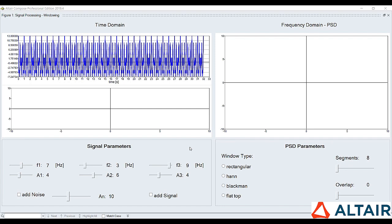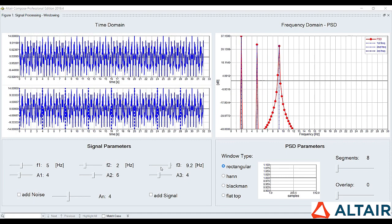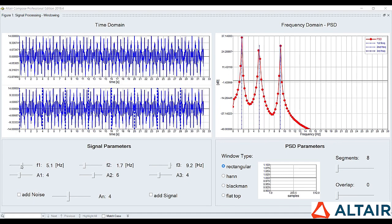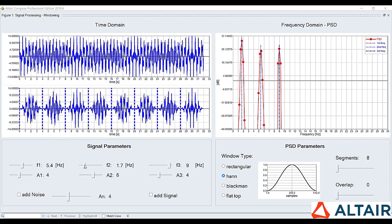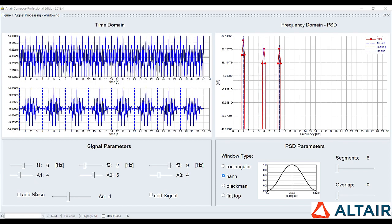For example, you can see the effect of different windows. In this case, the Hann window is reducing the leakage with respect to the rectangular window. Or you might want to see the effect of splitting the signal into more segments.